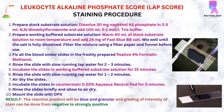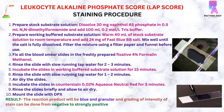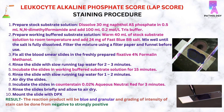Now let's talk about the staining procedure. For staining, a stock substrate solution is prepared by dissolving 30 mg naphthol AS phosphate in 0.5 ml N,N-dimethylformamide and adding 100 ml of 0.2 mol per litre Tris buffer. Prepare working buffered substrate solution by warming 40 ml of stock substrate solution to room temperature and adding 24 mg of fast blue BB salt, mixing well until the salt is fully dissolved. Then filter the mixture using a filter paper and funnel before use.